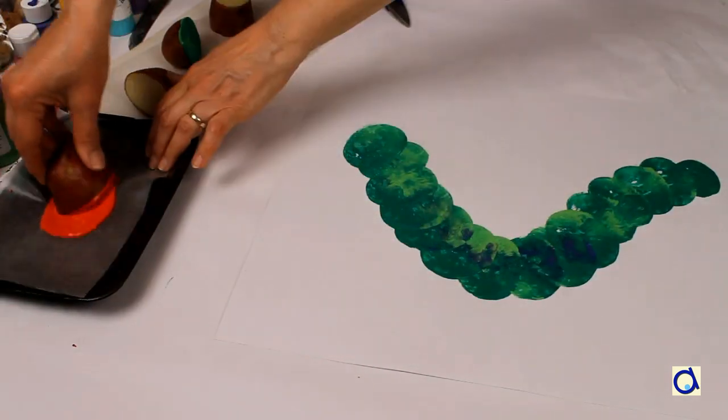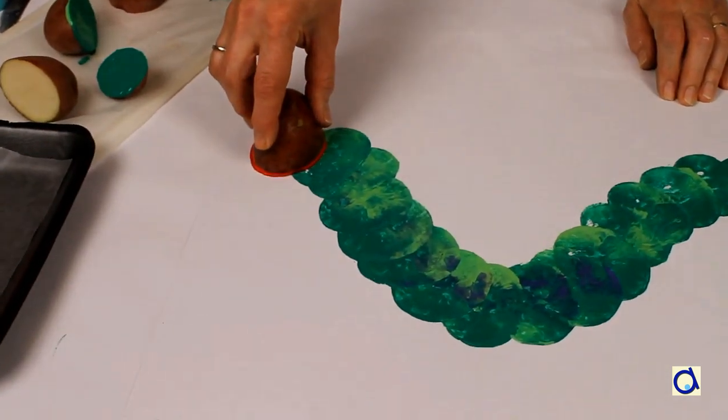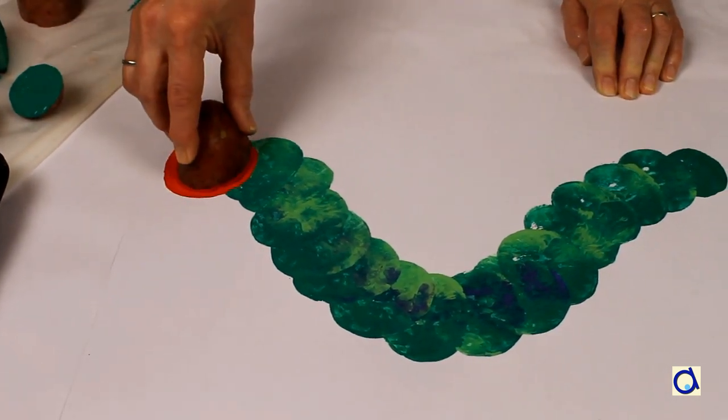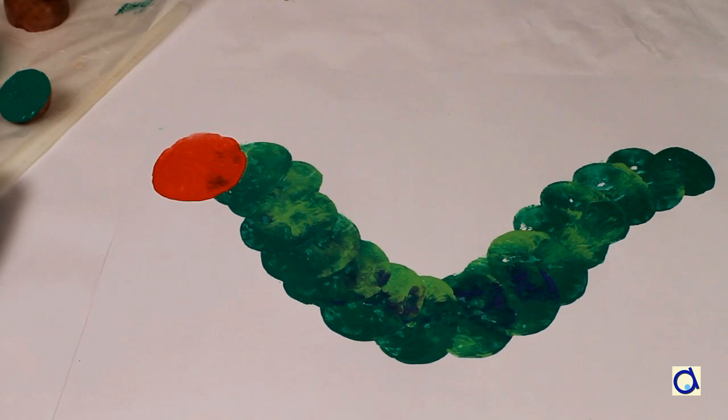To represent the head of the caterpillar, take a potato with a round section and use a different colour. I chose to match the colours of Eric Carle and make the head of the caterpillar red.